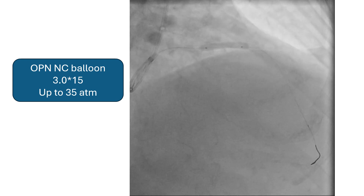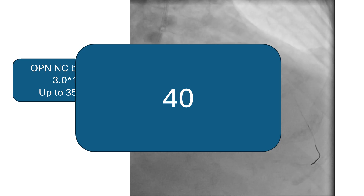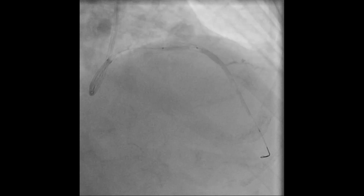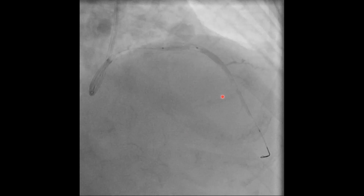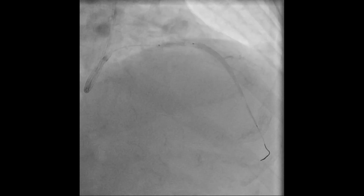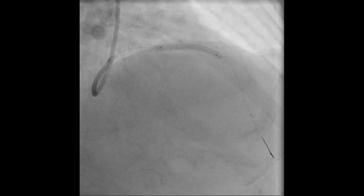We used a new OPN NC balloon 3 by 15, initially inflated up to 35 atmospheres. You have to increase the pressure by 5 atmospheres and wait for 5 seconds. So we inflated to 40, and then 45 — and this is what we got. The balloon ruptured and there was a type 3 perforation. As we had decided, we went right away for a stent graft and used it, without going through the full algorithm of how to manage perforation.